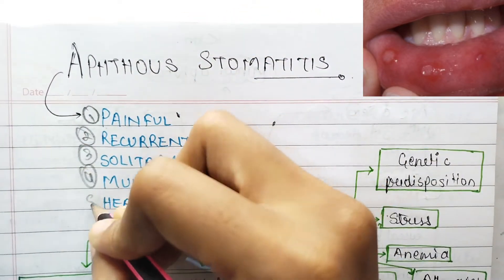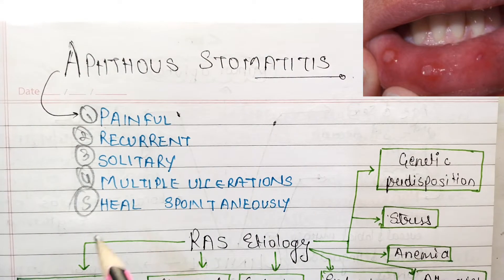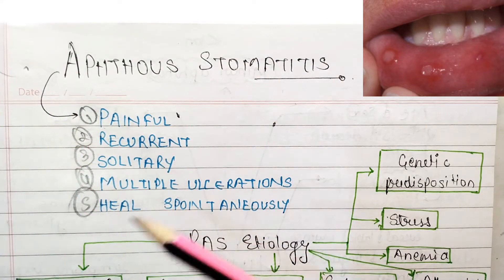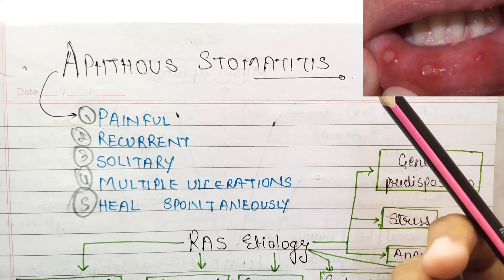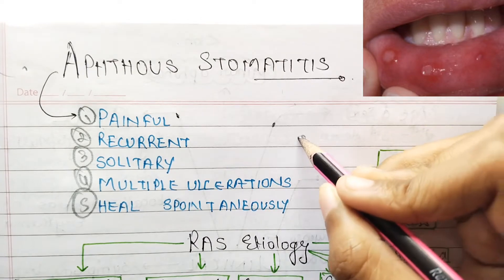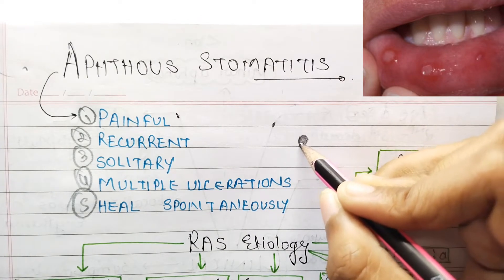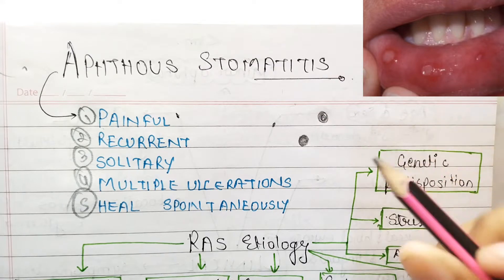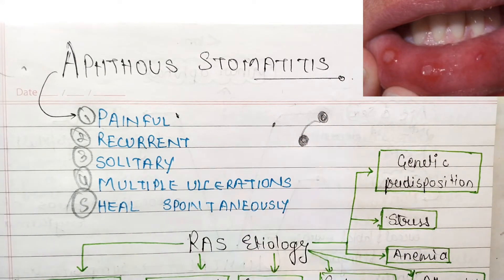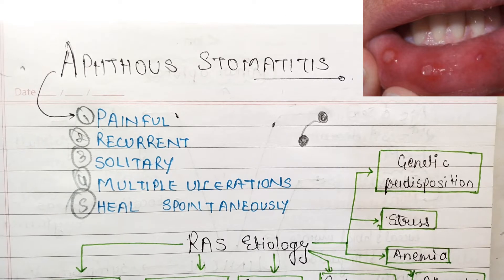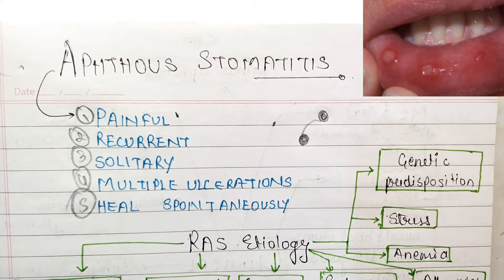There are five very important things you have to remember about recurrent aphthous ulcer or stomatitis. First, it is recurrent. It has a poor prognosis. It is painful and it is solitary. In severe cases there are some herpetiform ulcerations also. These ulcers heal spontaneously.